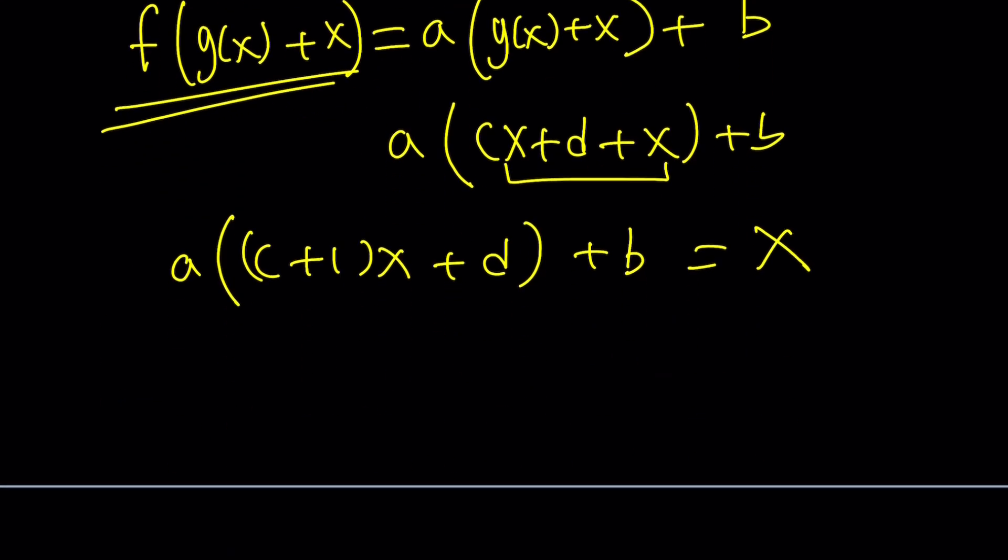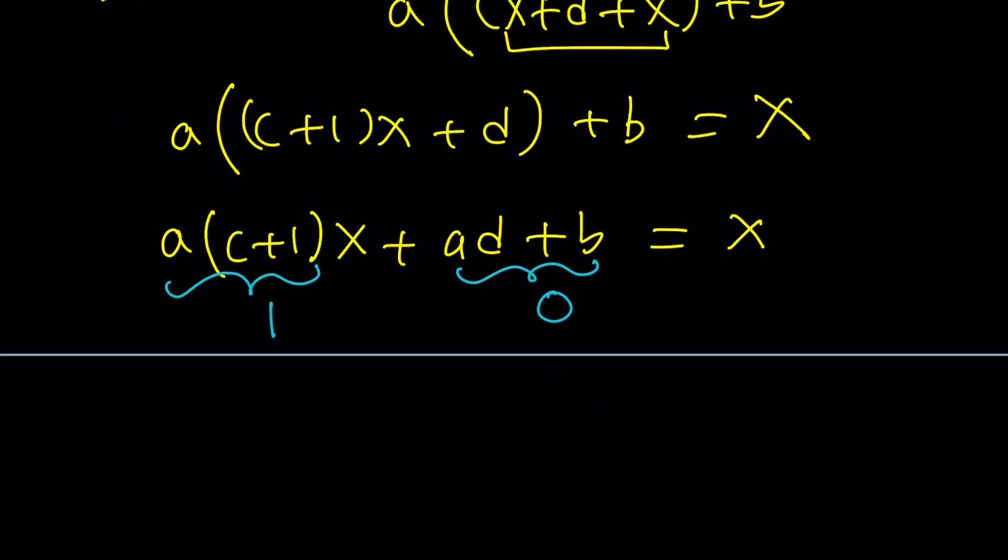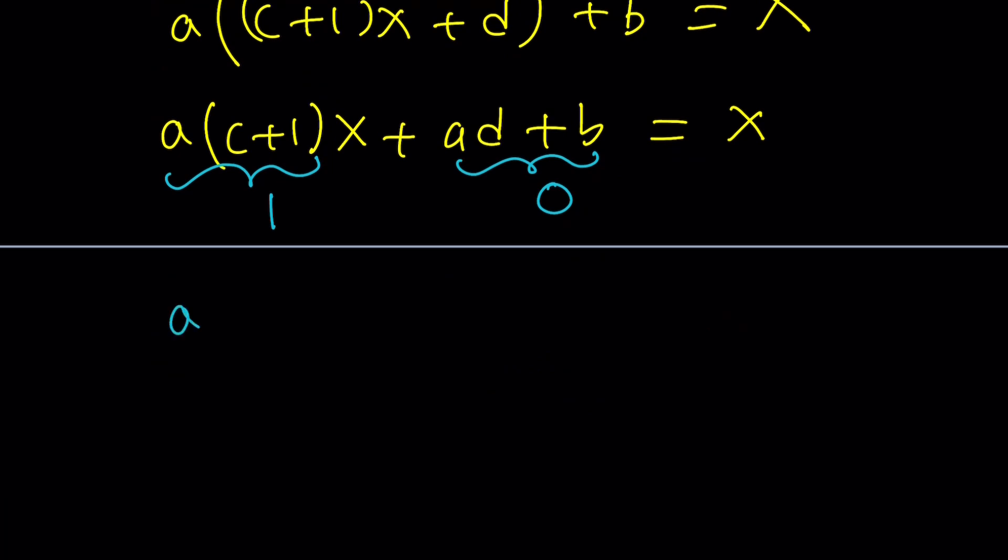Now let's simplify this a little bit. a(c + 1)x + ad + b = x. Now this is supposed to be true for all values of x in the domain. Therefore, we can safely say that the coefficient of x is equal to 1, and the constant term is equal to 0. So let's write these down: a(c + 1) = 1, and ad + b = 0. We've got two equations so far, and we have four variables. So we do need two more equations.